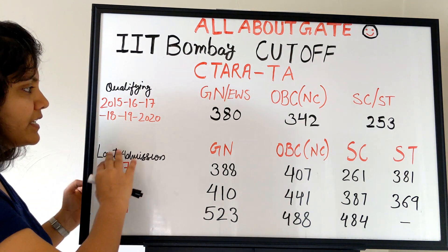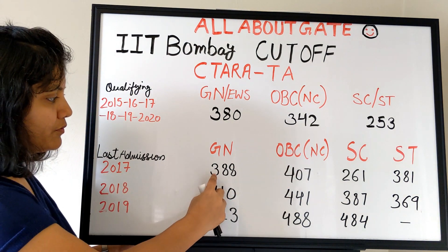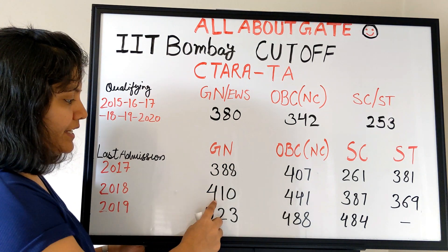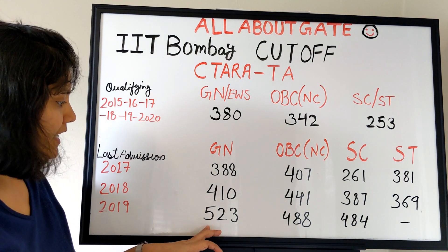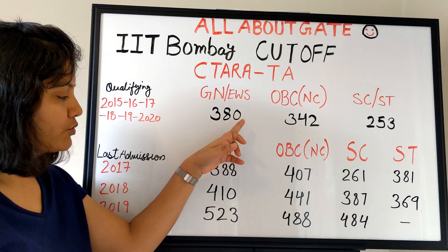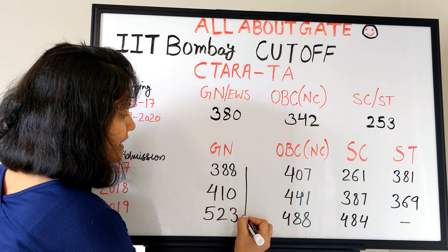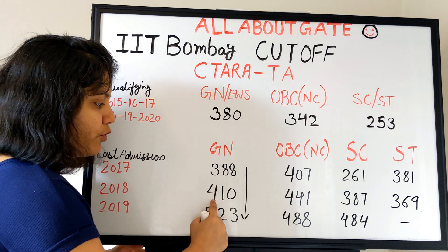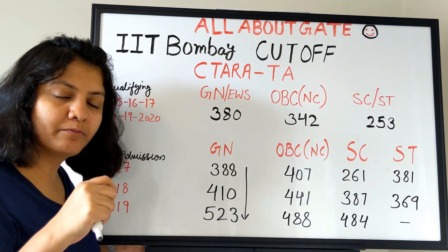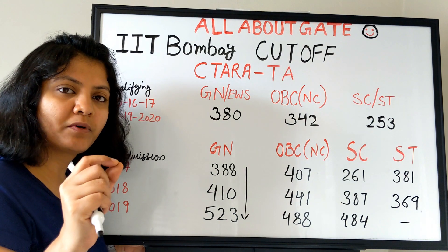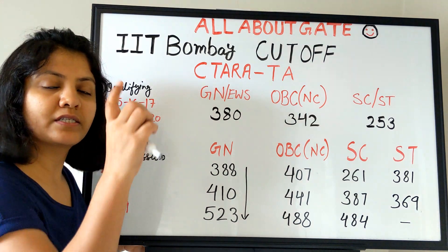Looking at the last admission scores for CITARA across categories: in 2017 it was 388 for General, in 2018 it was 410, and in 2019 it was 523. The minimum qualifying score is 380, but the actual last admission score has been increasing year by year — 388, 410, 523. This means it's not only low GATE score candidates who take admission here; even high-scoring candidates pursue their masters in CITARA.